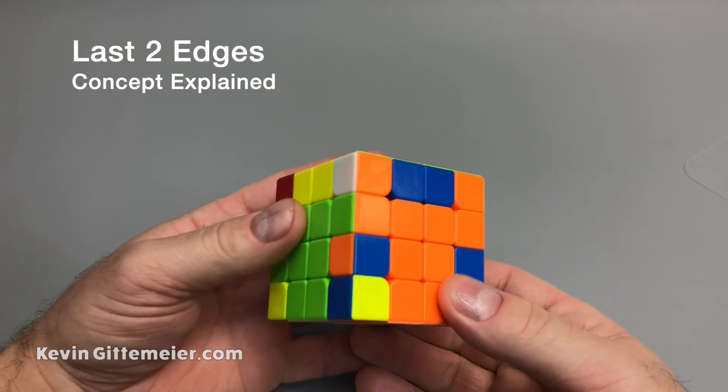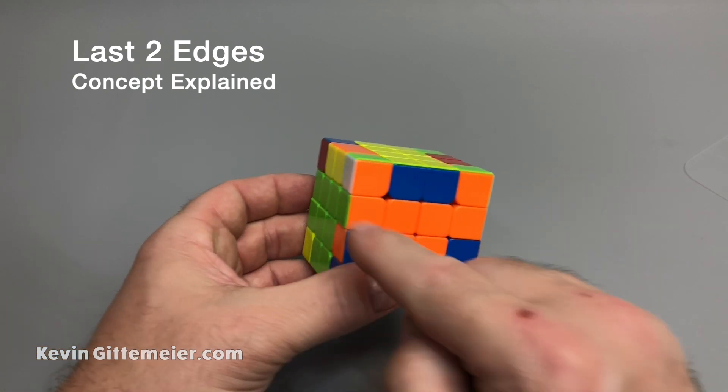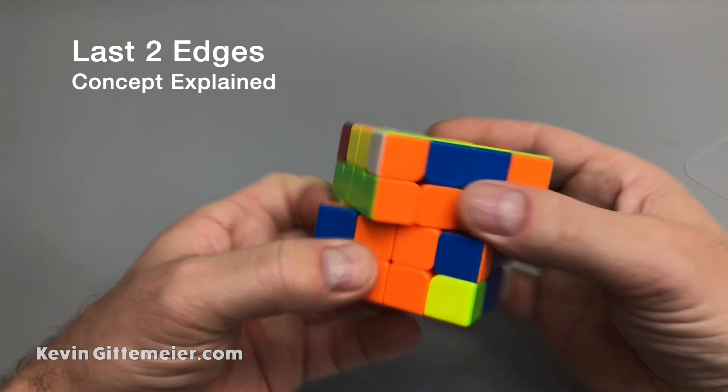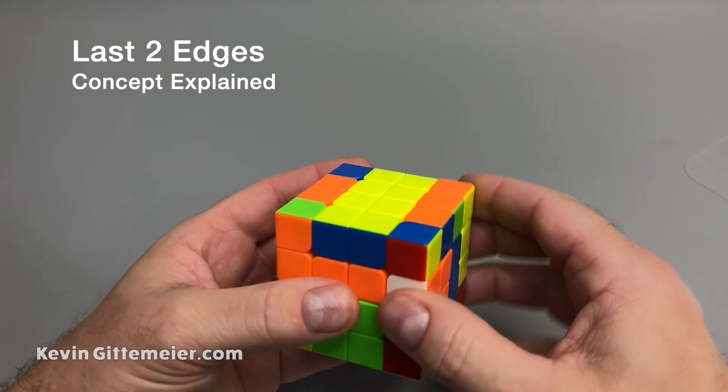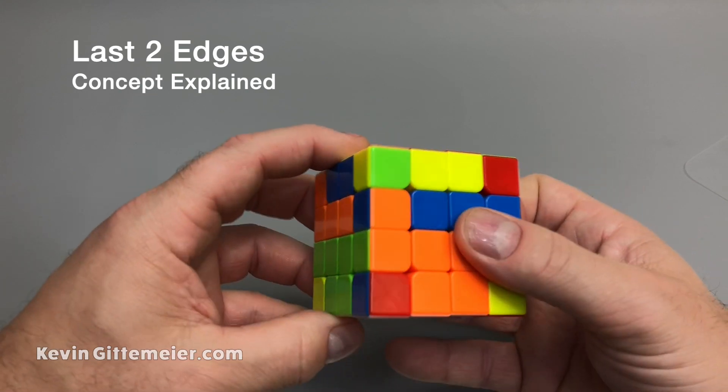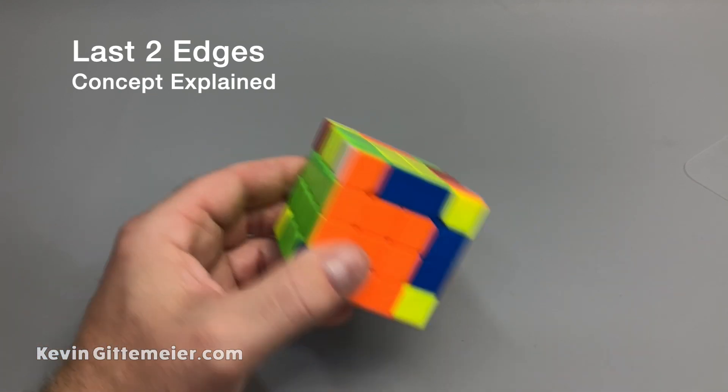So if we flip them again, they're in the same plane, and it doesn't matter how I solve them. I just have to split them. So I can split them this way, split them this way, doesn't matter. And now they're solved. And that's how easy the last two edges are.